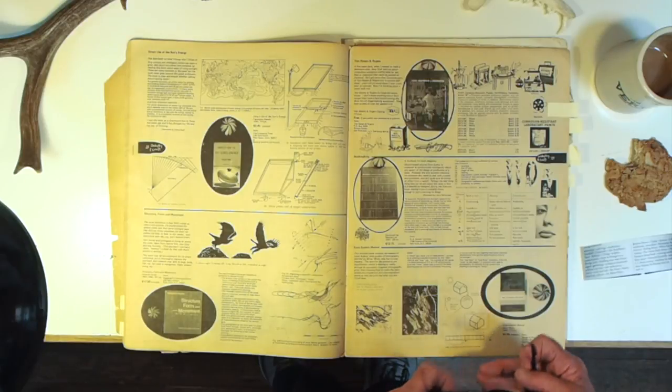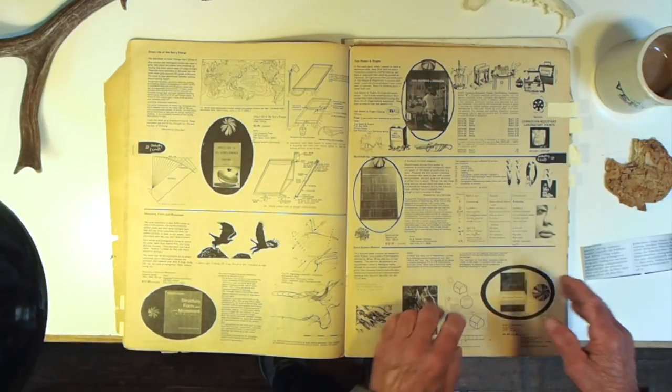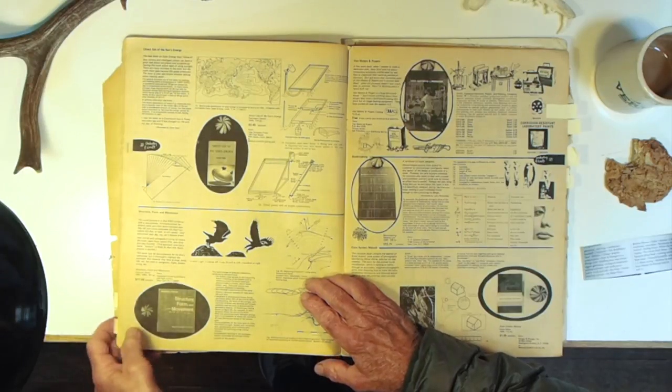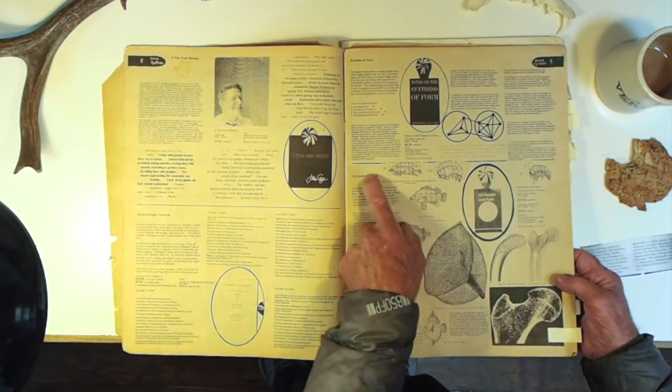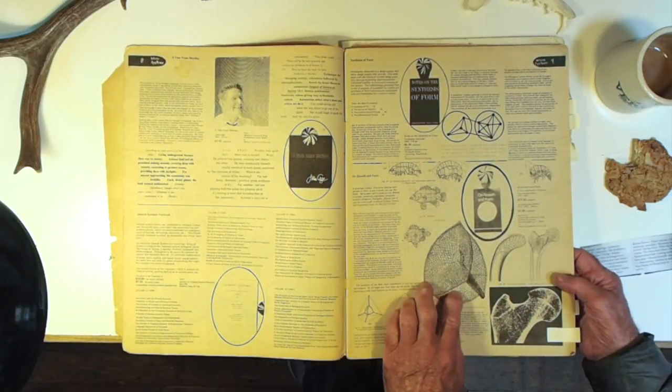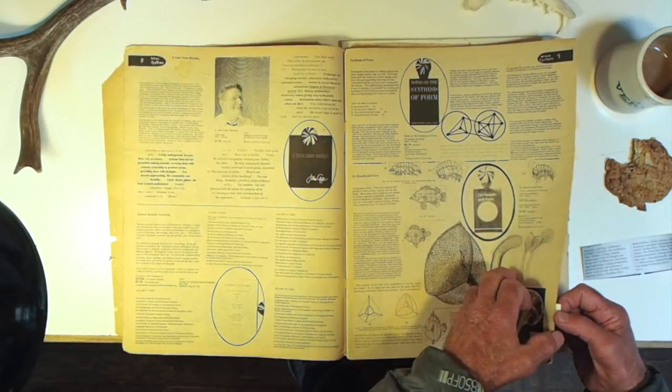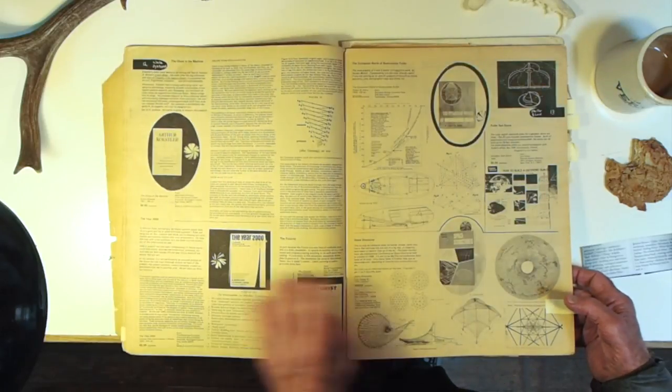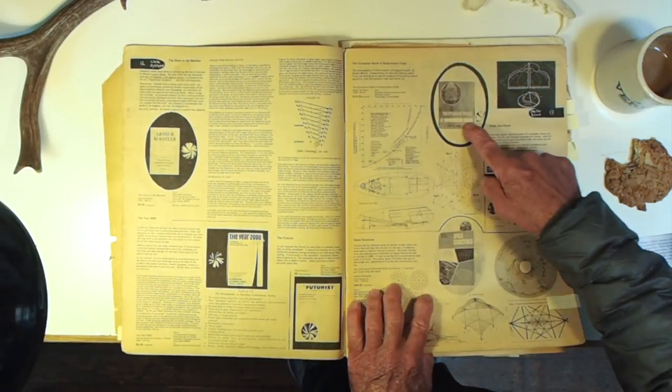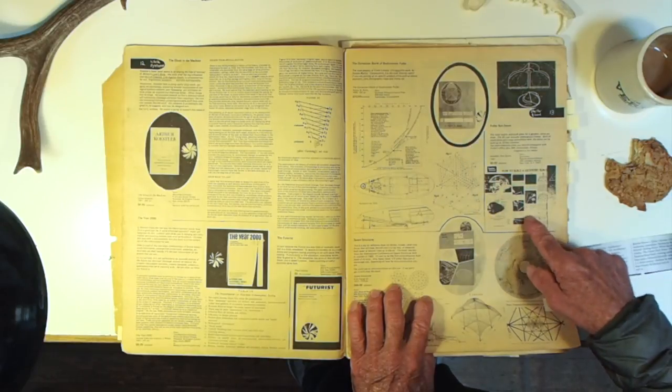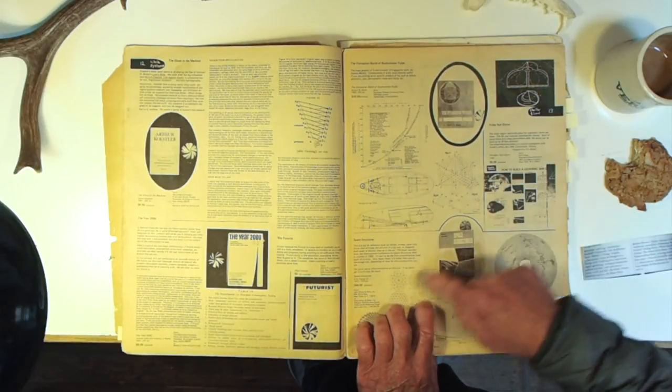Here's making books. Here's direct use of the sun's energy. Here's on growth and form, which was on the structure in nature. Here was the Dymaxion world of Buckminster Fuller. We were all very interested in Bucky Fuller's ideas on cars and domes, space structures.